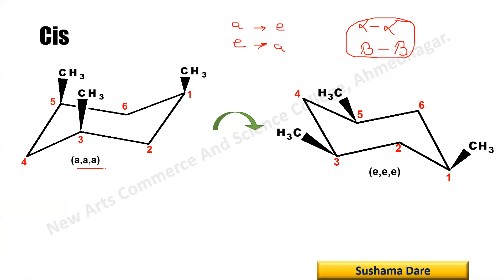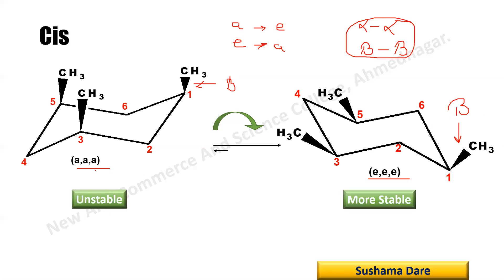So AAA changes to equatorial, equatorial, equatorial (EEE) — the beta bonds remain facing upward in all cases. As you know, the axial conformer is highly unstable due to non-bonded steric interactions. Therefore, the EEE conformer is more stable compared to the AAA conformer.